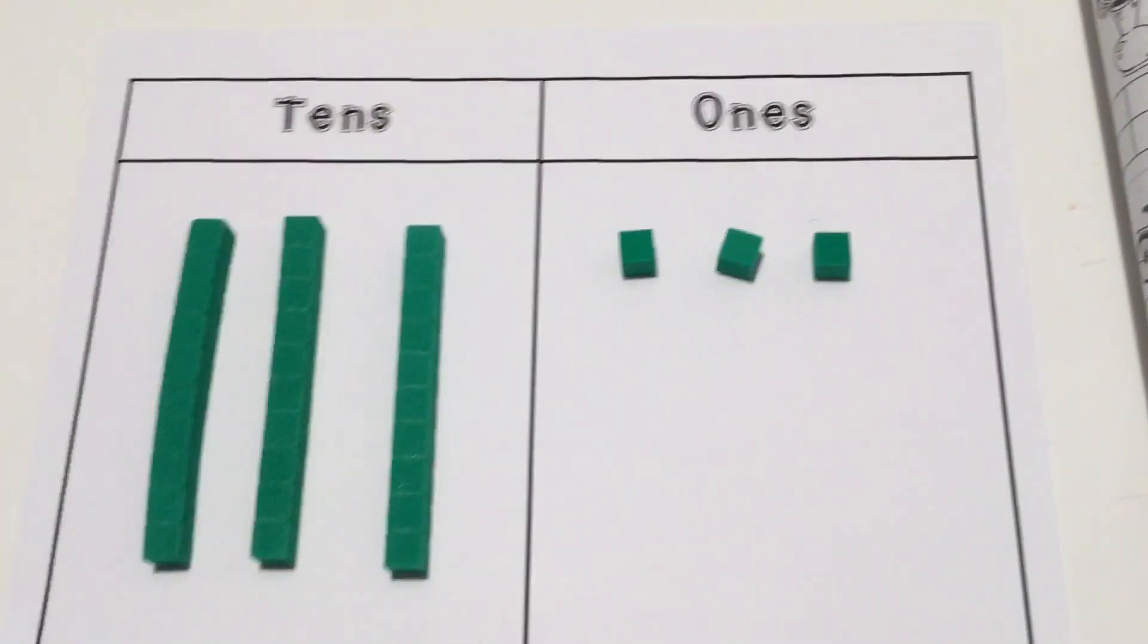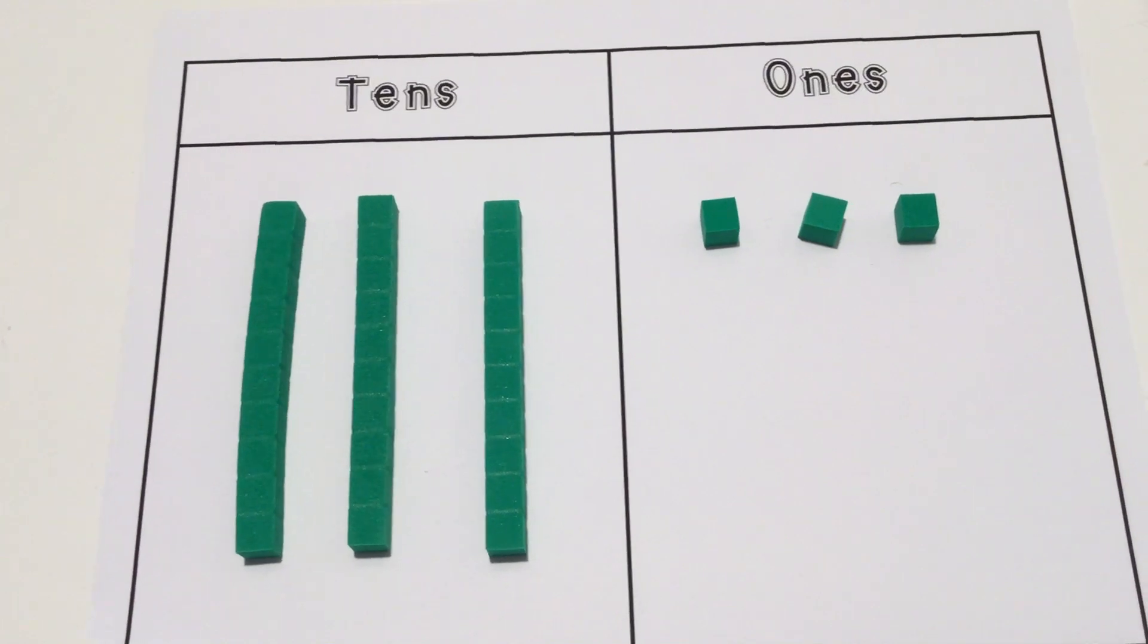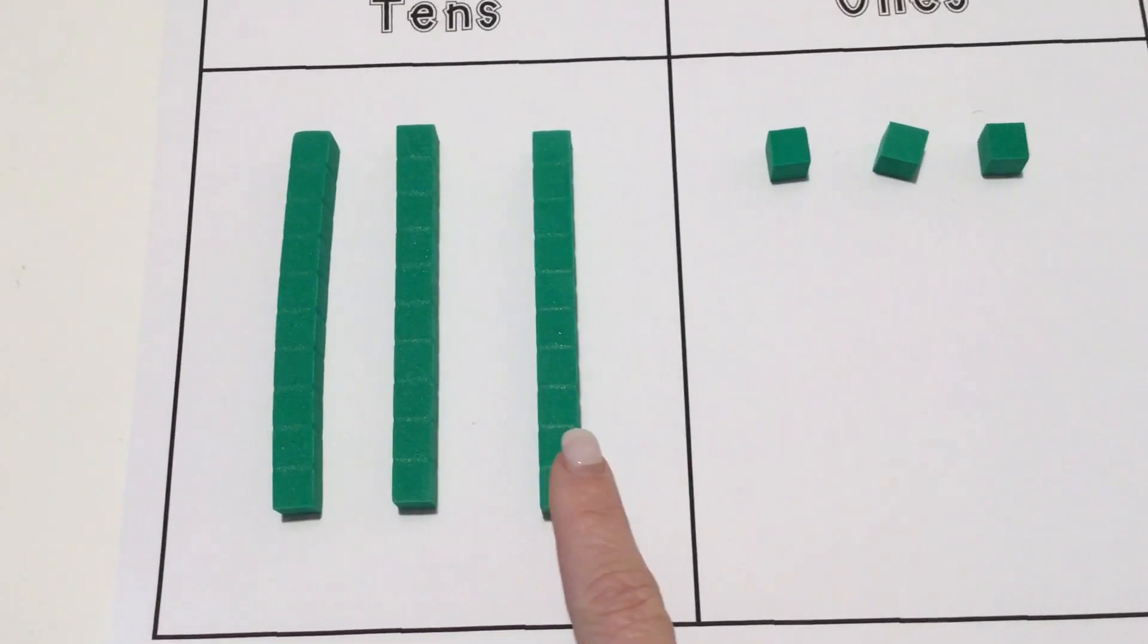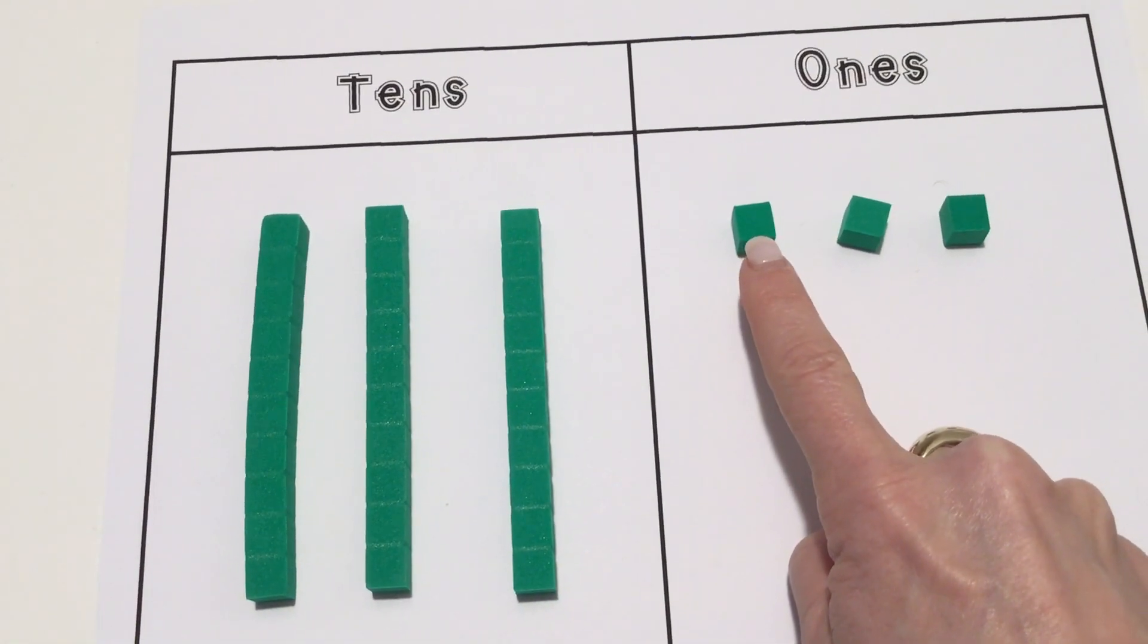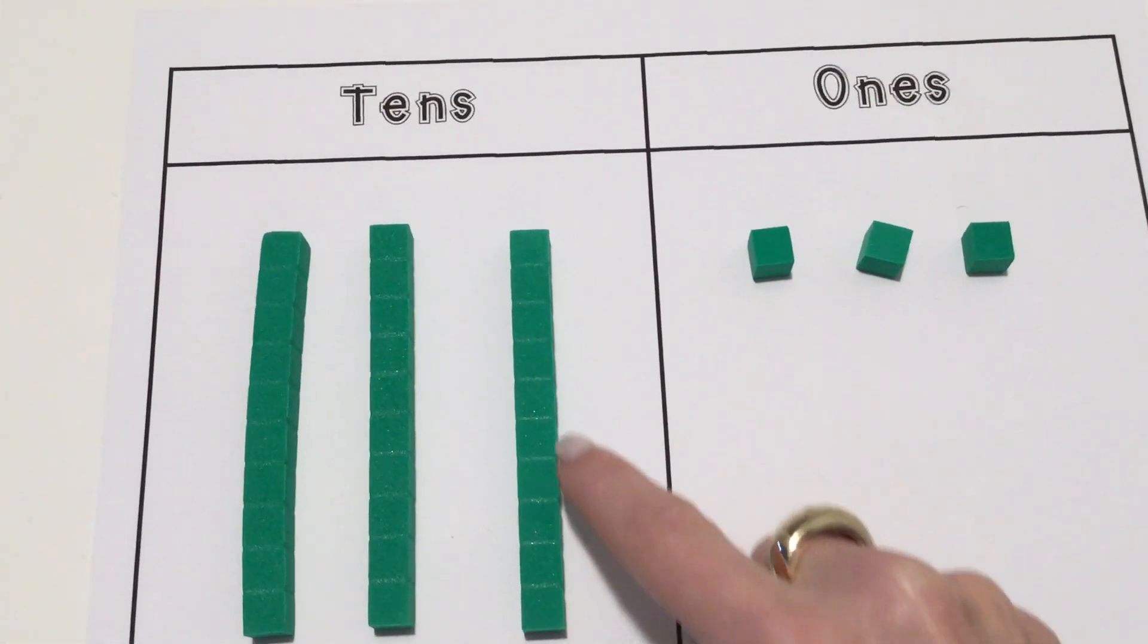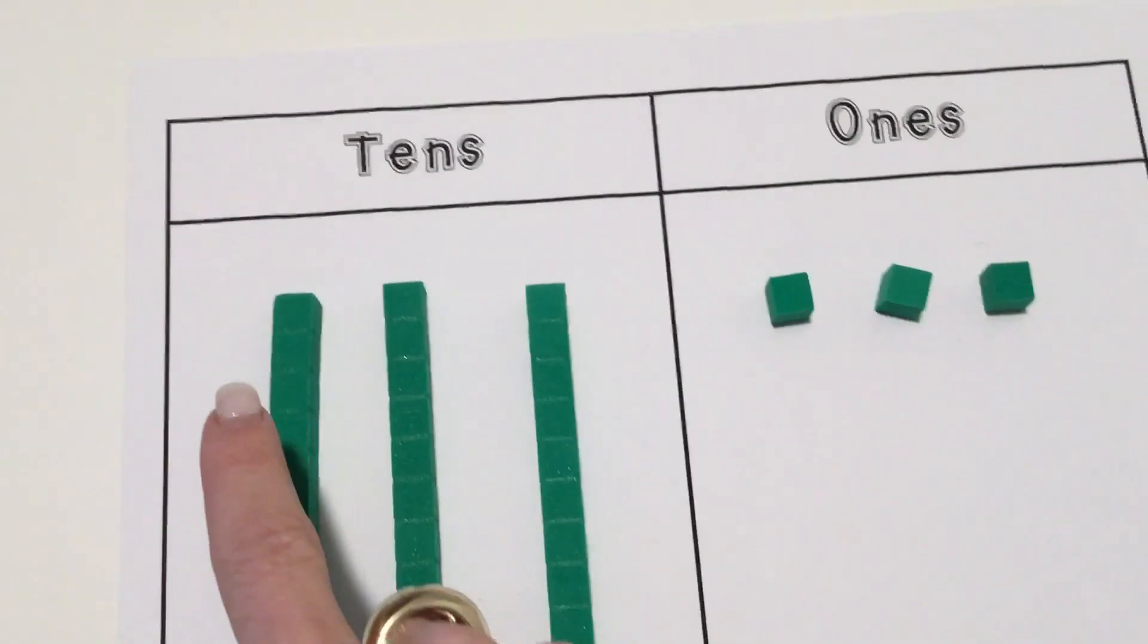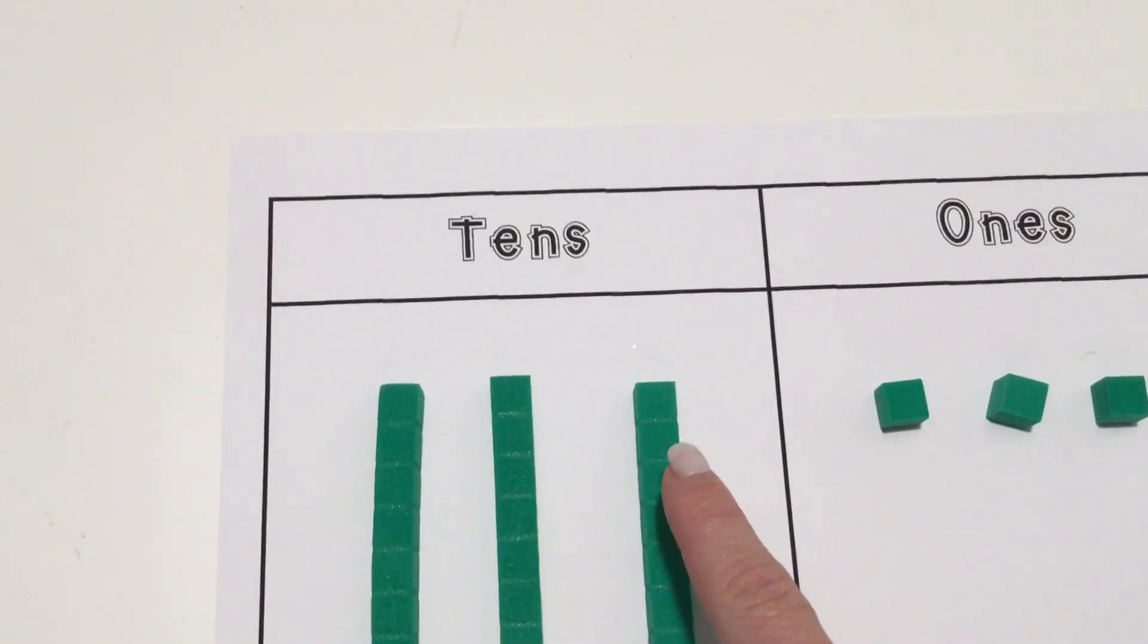I want to show you this tens and ones mat. We use this in the classroom with these same tens and ones blocks, and we put these over here because this is a 1. When we put 10 of those together we call this a 10. If we counted this it would be 1, 2, 3 groups of 10.